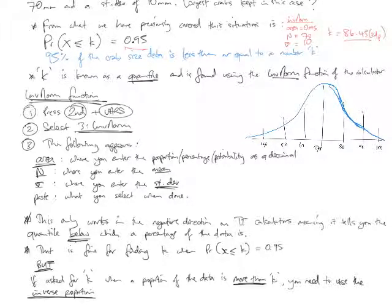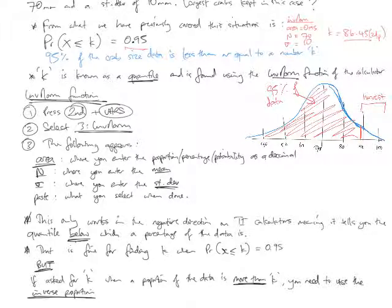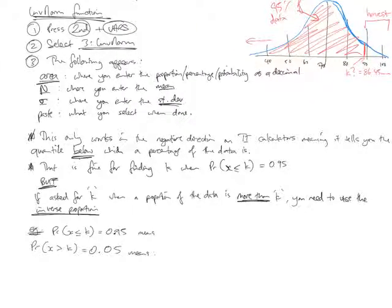And it was saying that K is in the top 95%, the bottom 95%. So, around here. This represents 95% of the data. 95% of the crab links. We're allowed to harvest all of those. And we're trying to work out what is K. What's the biggest crab that's kept? Or what's the smallest crab that's harvested? And using inverse normal, we found that that K is going to be 86.45 millimeters. So, that's what K is finding. But, this is only working in the negative direction.